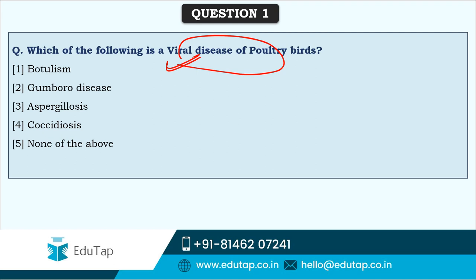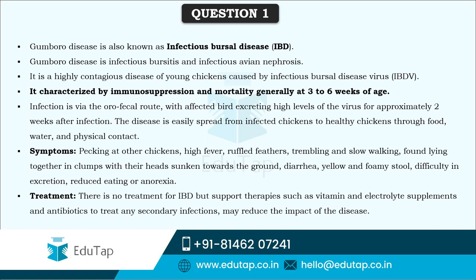Few diseases are also because of deficiencies in various minerals and vitamins. This particular disease is caused by a virus and that is Gumbro disease. This is one of the dangerous diseases associated with poultry birds, caused by a virus known as infectious bursal disease virus — that is IBDV. Gumbro disease is also known as infectious bursal disease.